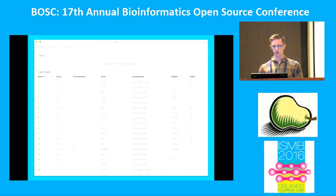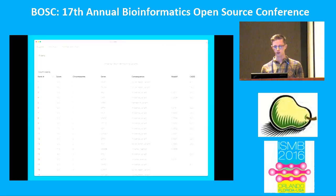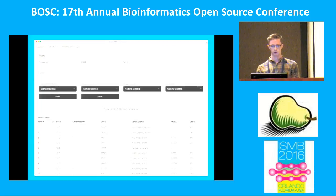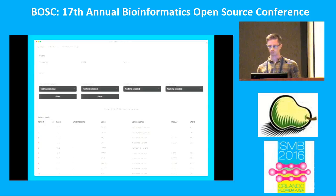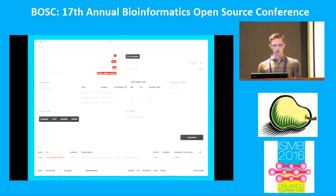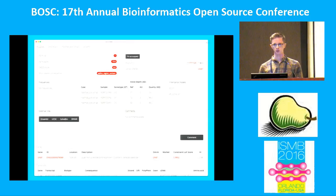If we dig into one of the VCFs, you will see a list of all the variants. You will see some chosen annotations that we pick out. And you can further drill down and filter them on frequency scores, severity scores like the CADD score, or other filters like inheritance models if you do trio analyses, for example.